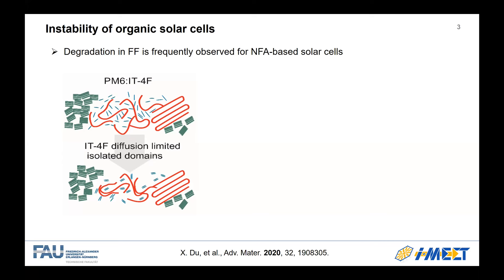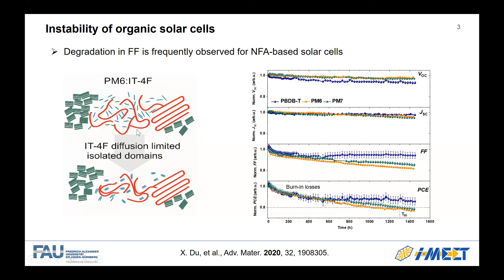Compared to PCBM, the non-fullerene acceptor has a limited diffusion constant within the polymer matrix, and it cannot cause such a large phase separation or segregation, but it will reorganize or even recrystallize at low temperature within these phases. This will cause electron traps, which leads to fill factor degradation, as you can see here.